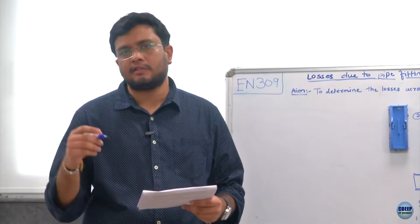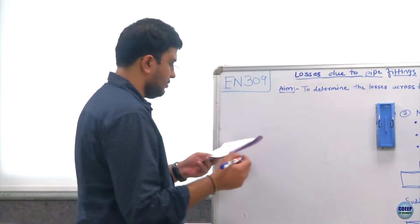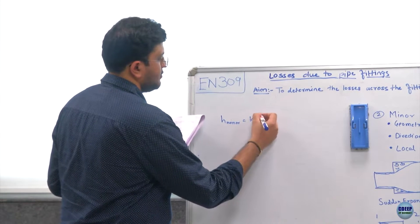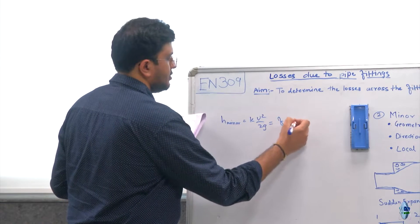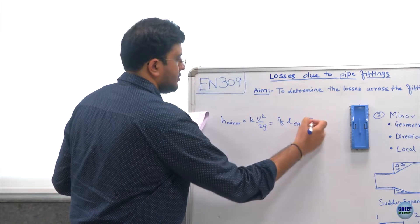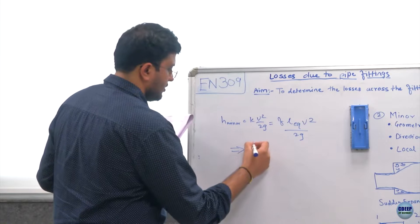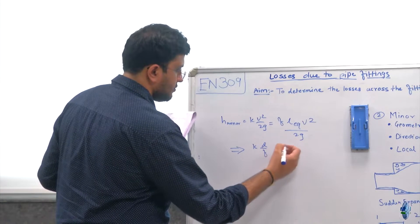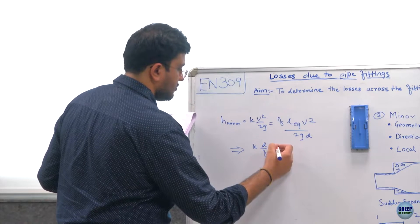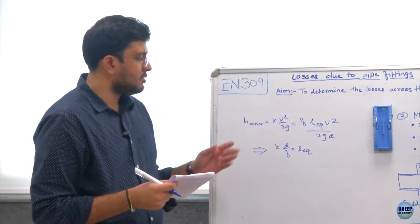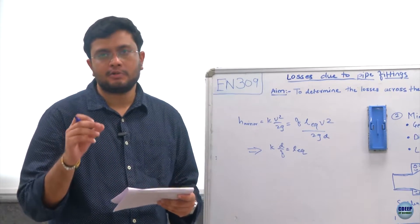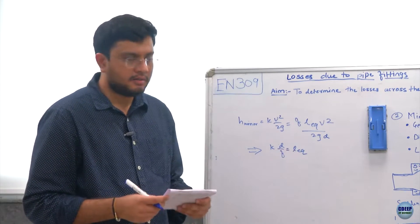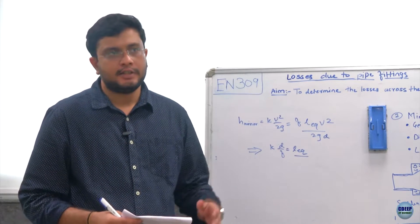Minor losses are also expressed in terms of equivalent length of a straight pipe. The equation is: H_minor = K · V²/(2g) = f · L_equivalent · V²/(2g·D), which gives L_equivalent = K·D/f. This equivalent length represents the length of straight pipe that would produce the same head loss as the fitting. We will also calculate L_equivalent for each fitting in today's experiment.